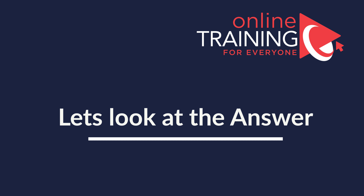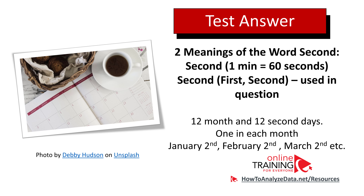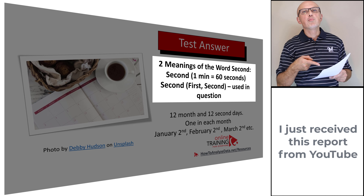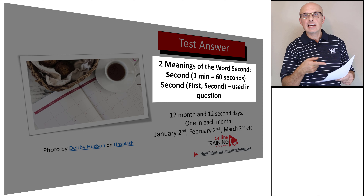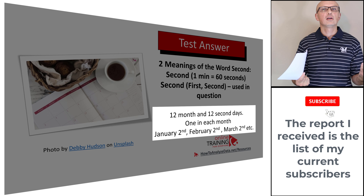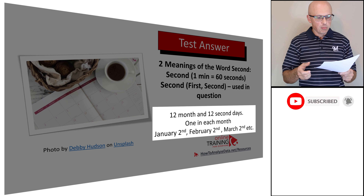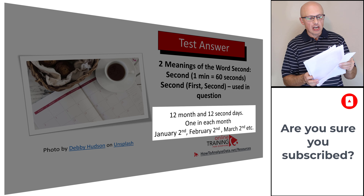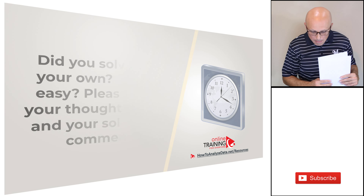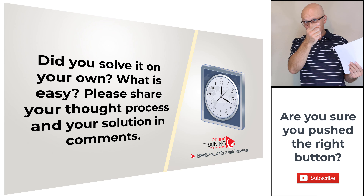This is a tricky question that challenges your understanding of the word 'second.' There are two meanings: one is a unit of time (60 seconds in a minute), and the other is an ordinal position in a sequence (first, second, third). The second meaning is used here. In a year there are 12 months, and there are 12 'second' days — January 2nd, February 2nd, March 2nd, and so on. So the answer is 12.